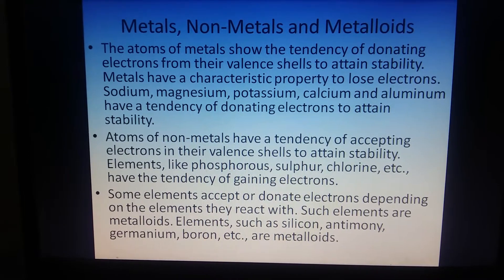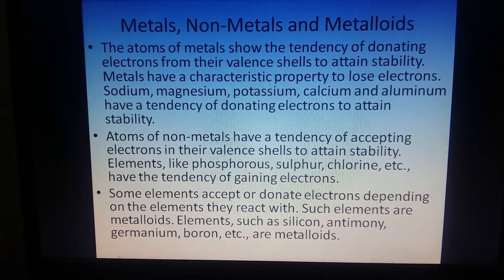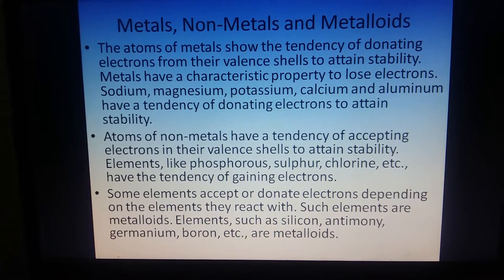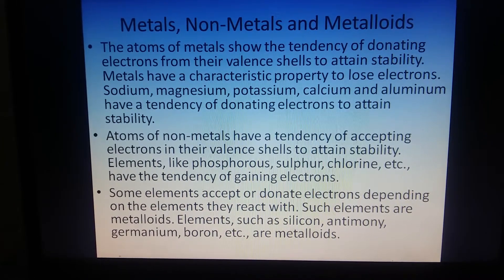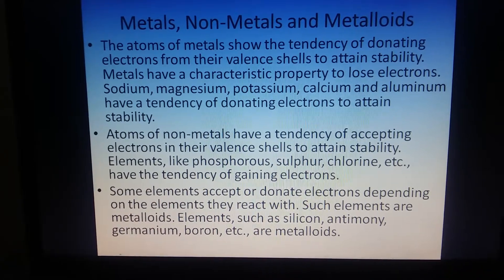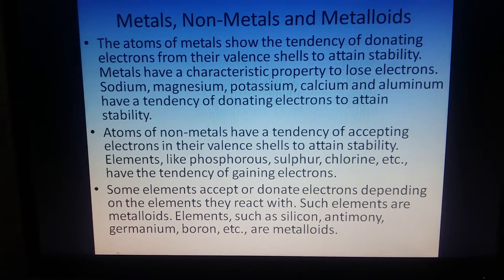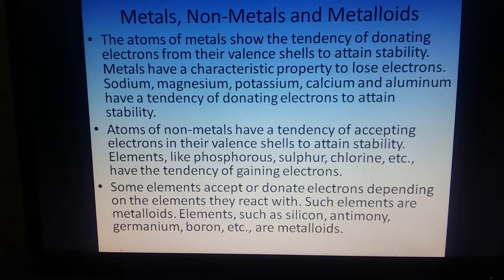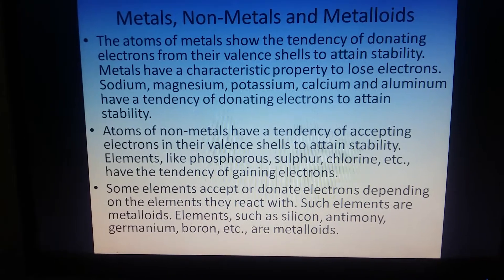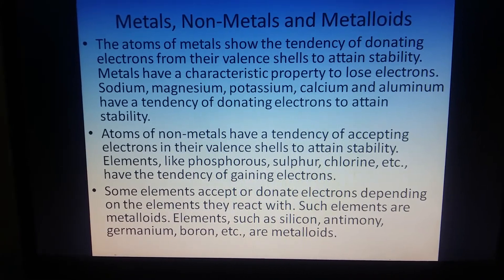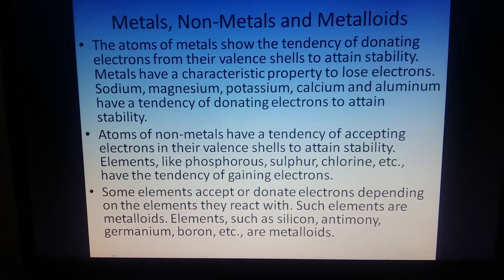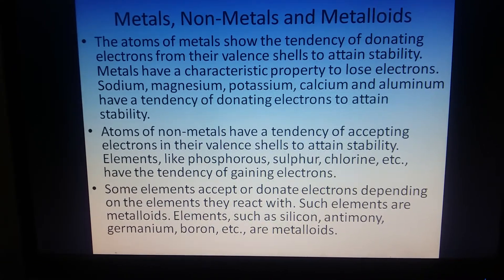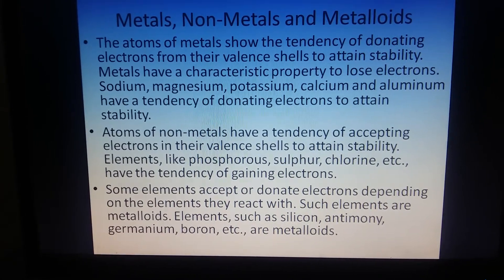Non-metals have a tendency of accepting electrons in their valence shell. They want to gain electrons so that they could have 8 electrons in their outermost shell. Such elements include phosphorus, sulfur, and chlorine. Some elements may accept or donate electrons depending on the elements they react with — these are metalloids. In metalloids, whether they accept or donate electrons depends on the element they are reacting with. Examples are silicon, antimony, germanium, boron, etc.